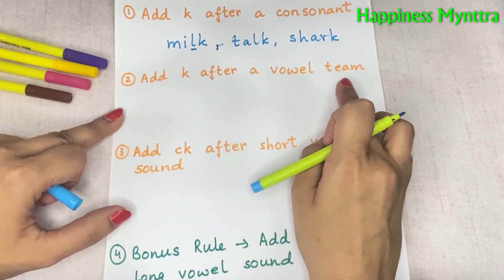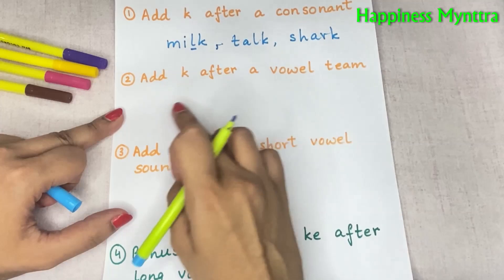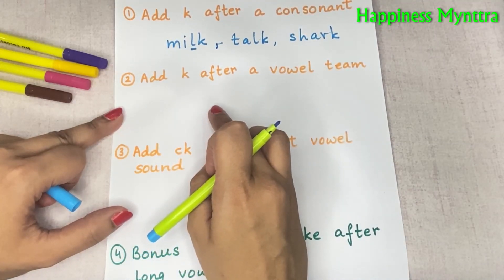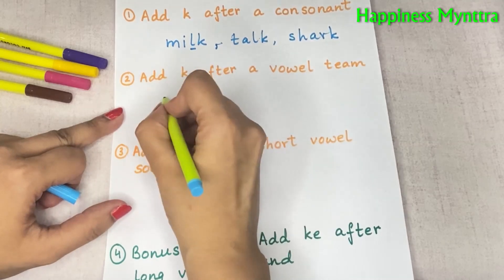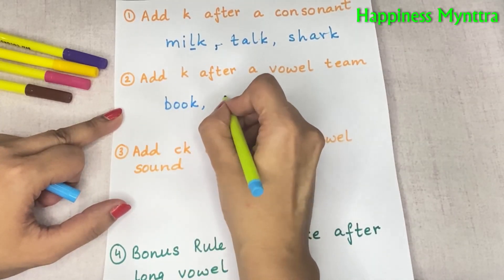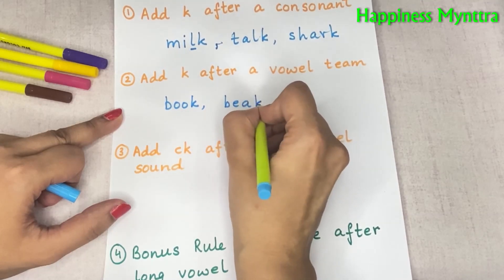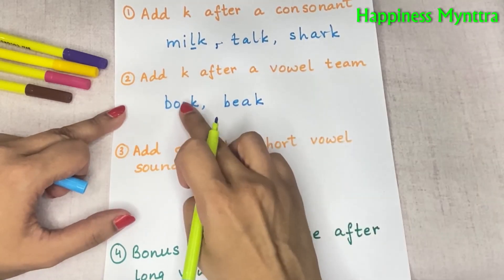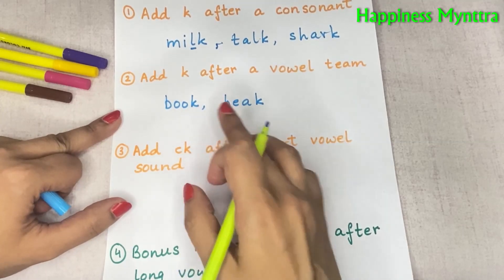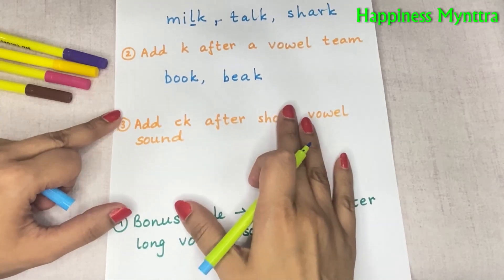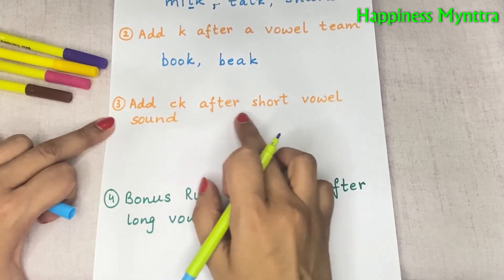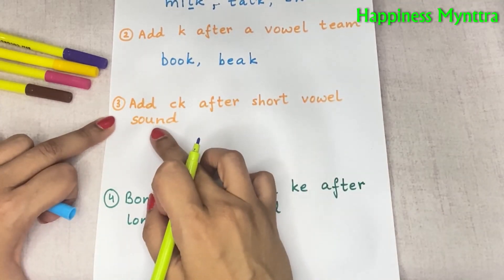Next, we add just a K after a vowel team, which means if there are two vowels together, we do not add CK — we just add a single K. Words like 'book' and 'peak' — there are two vowels together, so we add just a single K.